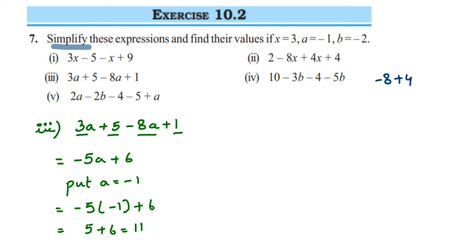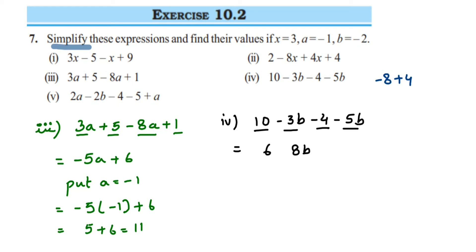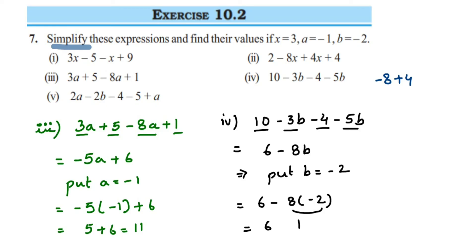The fourth question: 10 minus 3b minus (4 minus 5b). The constants: 10 minus 4 is 6. The like terms: minus 3b minus 5b — minus minus is plus, so 3 plus 5 is 8, both negative, giving minus 8b. The simplified form is 6 minus 8b. Substituting b=-2: 6 minus 8 into minus 2 — minus times minus is plus, giving 6 plus 16, which equals 22.